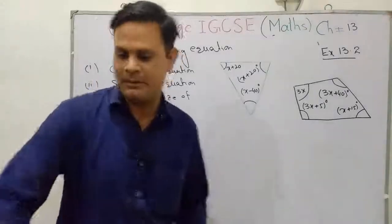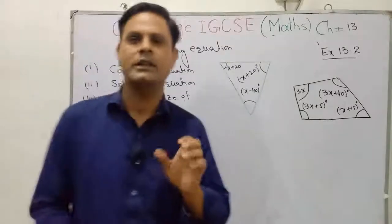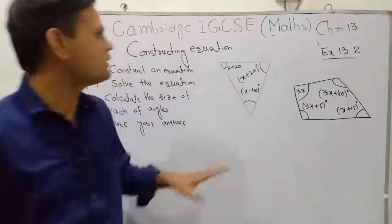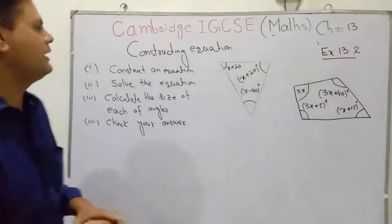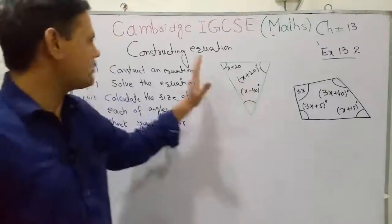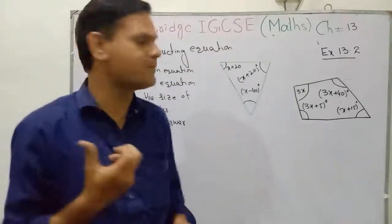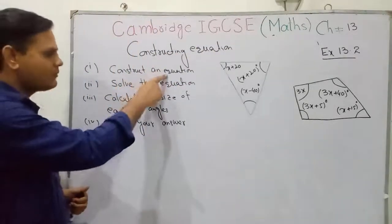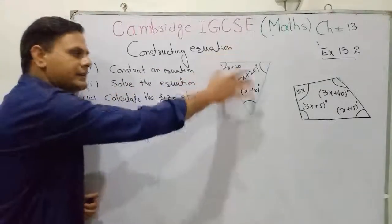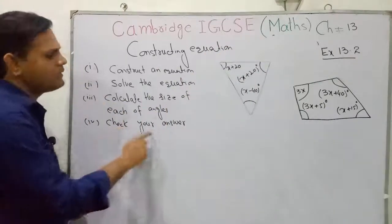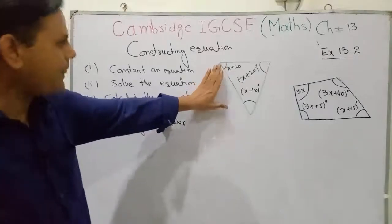Hello guys, welcome again. In the previous lecture we solved the linear equation for one variable. Today we start Exercise 13.2. Here I take two questions. The question is constructing an equation — how we form an equation. First, construct an equation, solve the equation, calculate the size of each angle in this diagram, and at the end check your answer.